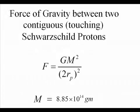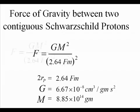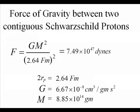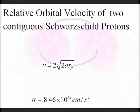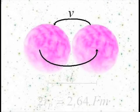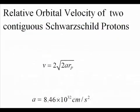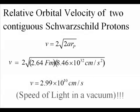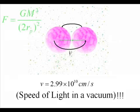Haramein then uses this mass to calculate the gravitational force between two contiguous Schwarzschild protons using the semi-classical approach. We yield a gravitational force of 7.49 times 10 to the 47th dynes. If we then calculate the relativistic velocity of two Schwarzschild protons orbiting each other with their centers separated by one proton diameter, we get 2.99 times 10 to the 10th, which is also equal to the speed of light. This essentially means that the protons inside of a nucleus can be thought of as black holes orbiting each other at the speed of light.